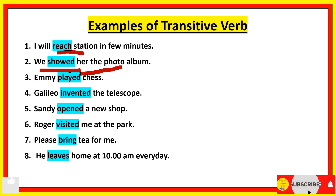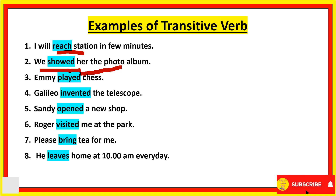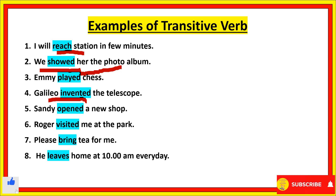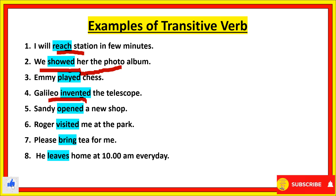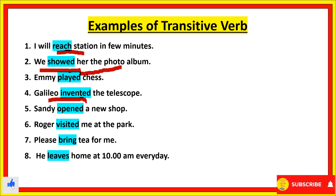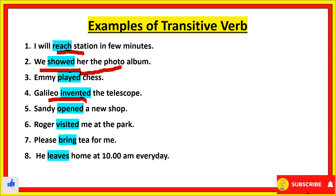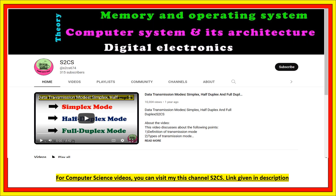Similarly, 'We showed her the photo album.' Here 'her' is a pronoun that follows the verb 'showed,' so it is an object receiving the action of showing — making it a transitive verb. Likewise, 'Galileo invented the telescope.' The action of invention is received by the object 'telescope,' so that is also a transitive verb. You can pause the video and go through each example.